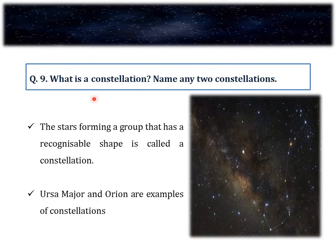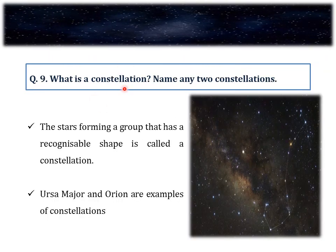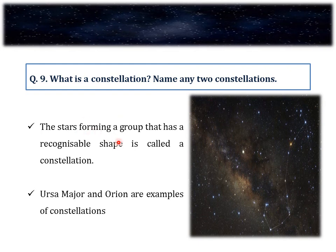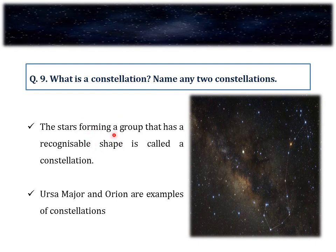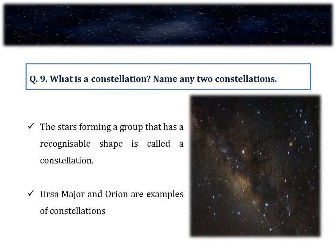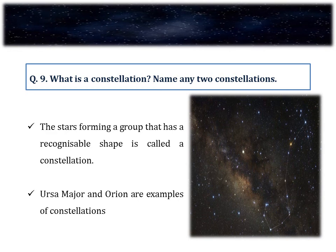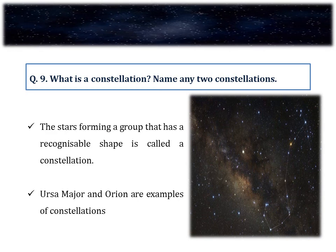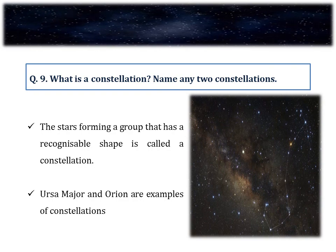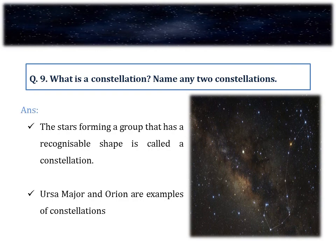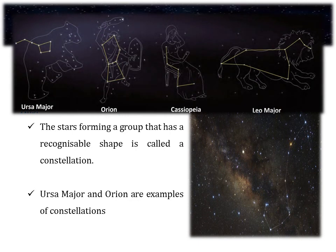Question number 9. What is a constellation and name any two constellations? A group of stars forming a pattern that has a recognizable shape or pattern is called a constellation. The shapes of constellations resemble objects familiar to us. Some constellations observable in the night sky are Ursa Major, Orion, Cassiopeia and Leo Major.